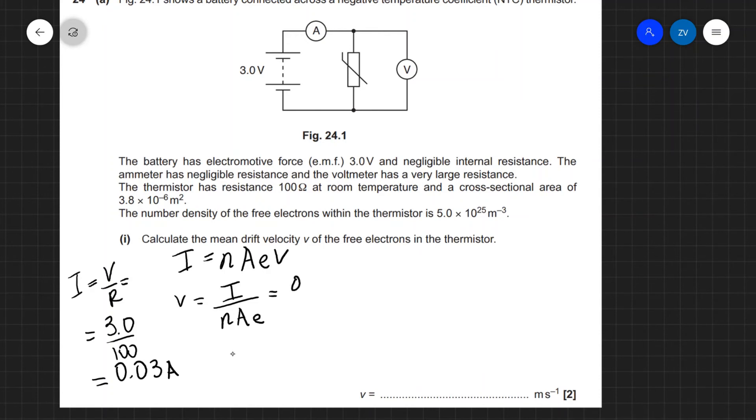So our drift velocity is going to be 0.03 divided by our area. Where is our area? There it is 3.8 times 10 to the power of minus 6 meter squared like so. It's always worth double checking the units because sometimes they might try and catch you by giving you for example centimeters squared or millimeters squared so it's just always worth double checking the units on all of these questions.